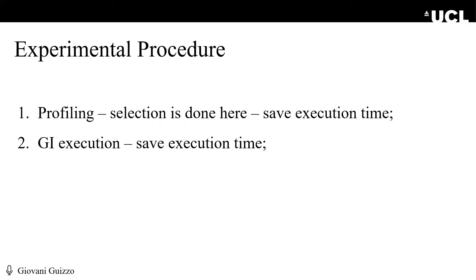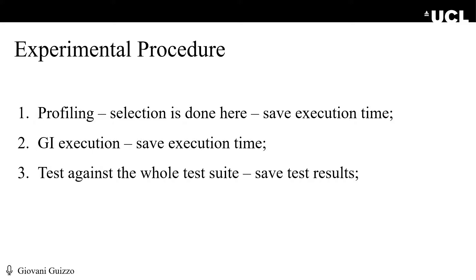We track execution time for both profiling and execution phases. The results of the GI execution are a set of optimized software variants. However, these variants are only tested against a subset of test cases, meaning that the RTS technique might have missed some important test cases that could reveal a bug. Hence, in the third phase, we execute the whole test suite against the software variants to determine whether this actually occurs — in other words, whether the variants would fail if the full test suite were used with no RTS.